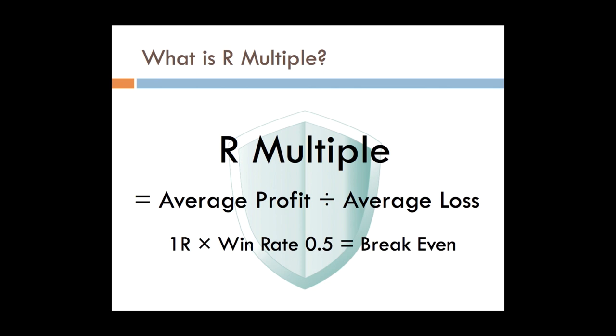Finally, R-multiple, this is another critical number to know, but you take average profit and divide it by average loss. This is in pips, not the profit, how much you made, but make sure it's in pips, but for example, when your average profit is 10 pips, and your average loss is also 10 pips, then that's 1 R. Your R-multiple becomes 1. And if you have 1 R, and if your winning rate is 0.5, 50%, then it becomes break even.